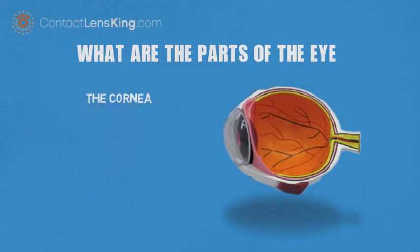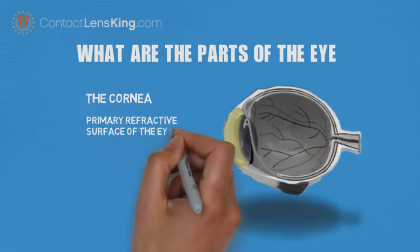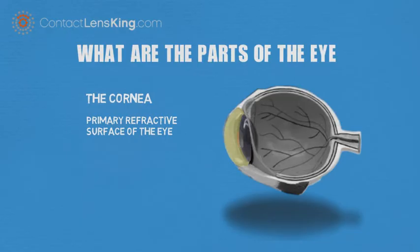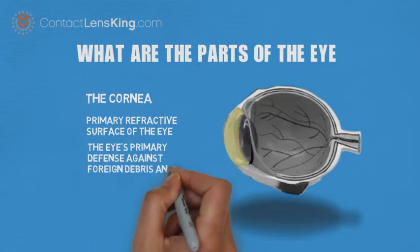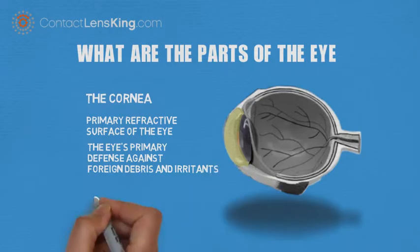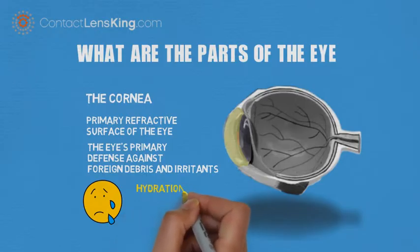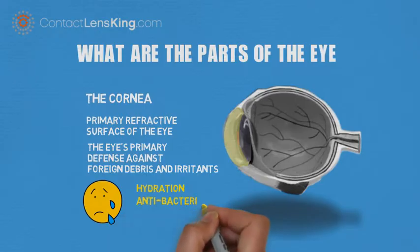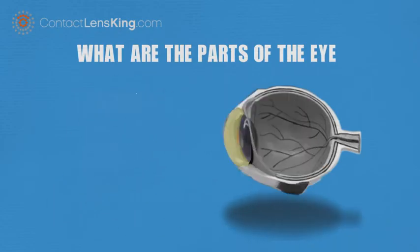The cornea. The clear bulging surface in front of the eye is the cornea. The cornea helps us see in a number of ways, including being the primary refractive surface of the eye and the eye's primary defense against foreign debris and irritants. Tears also help the cornea maintain its hydration, antibacterial integrity, water content, and extensive oxygen exchange.